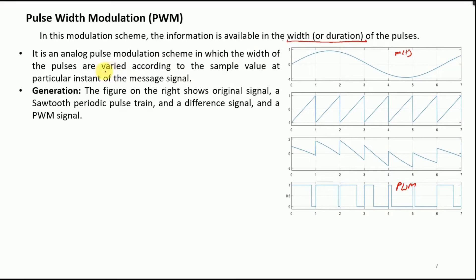In PWM, the width of the pulses is varied according to the sample value at a particular instant of the message signal. For generation, a simple method is to take the message signal m(t) and subtract a sawtooth signal from it. A comparator is then applied: if the value is greater than 0 it is set to 1, and if less than 0 it is set to 0, yielding the PWM output.